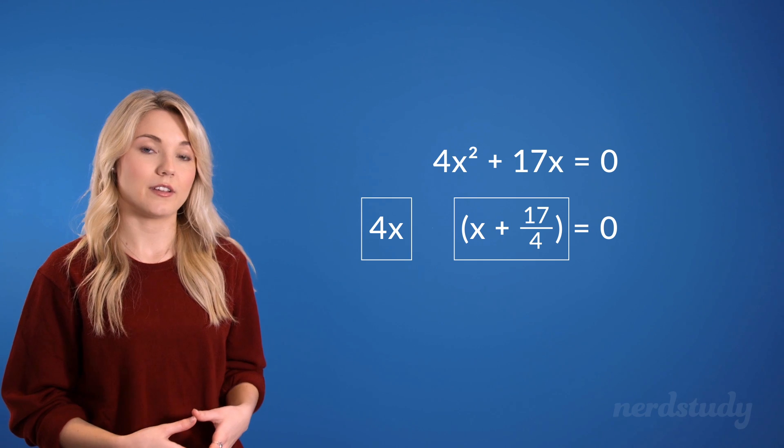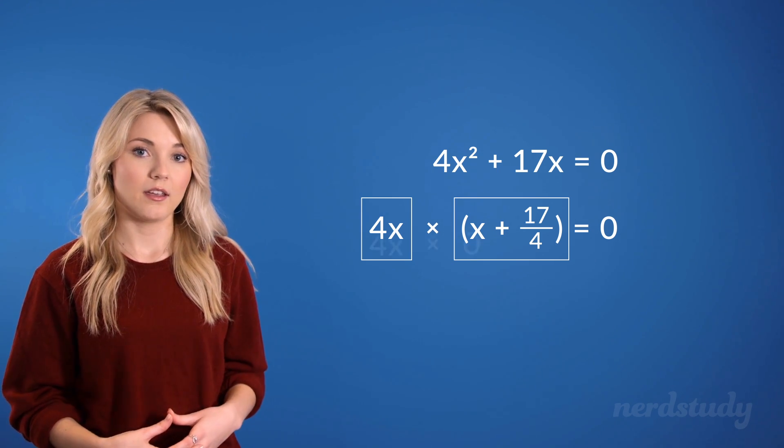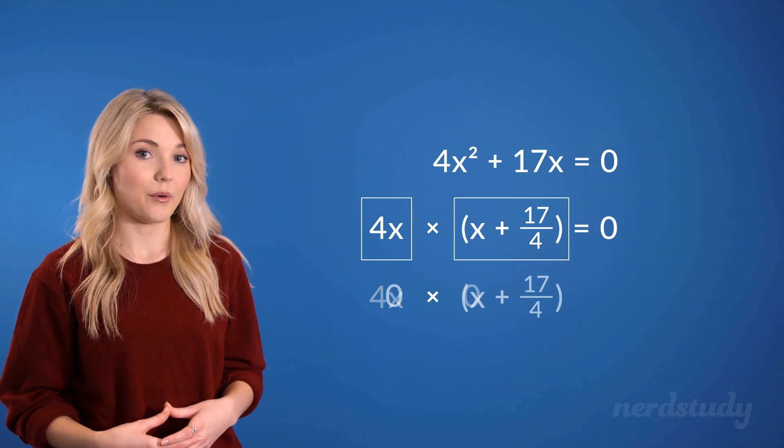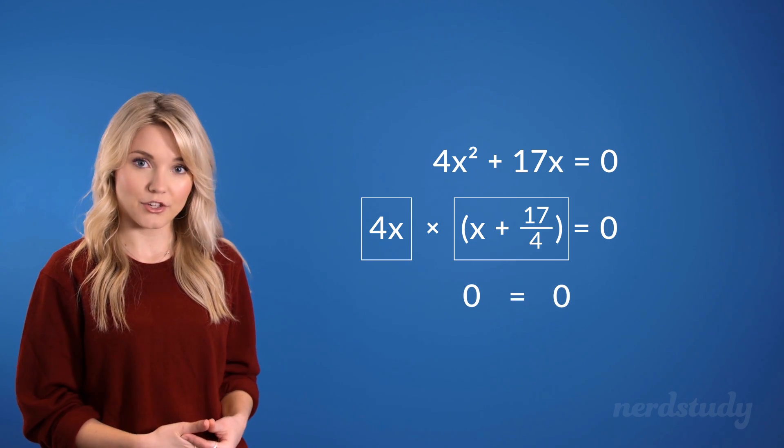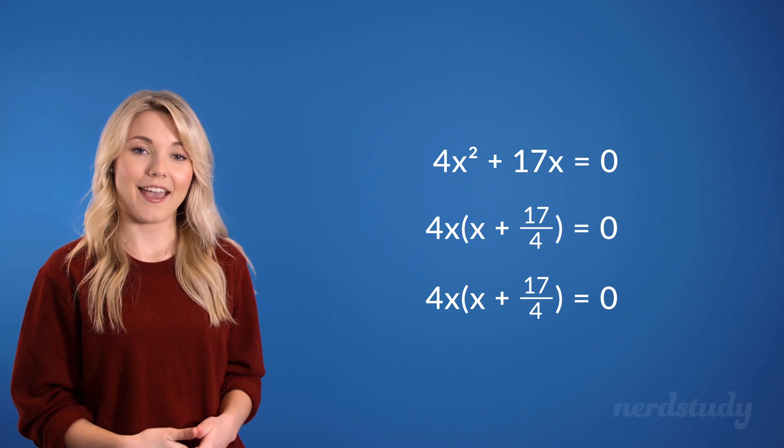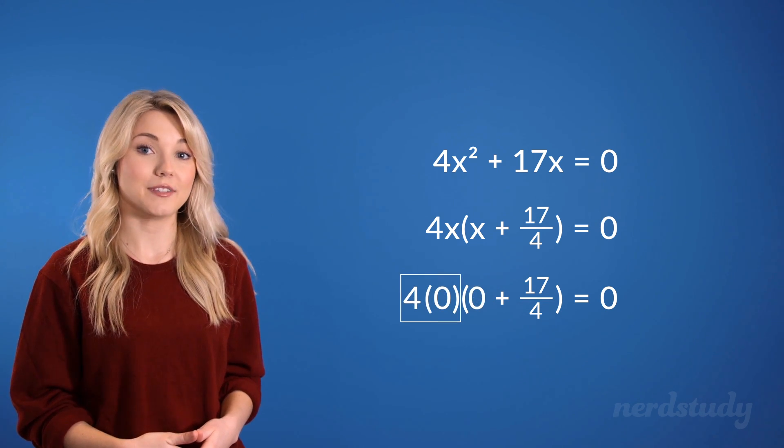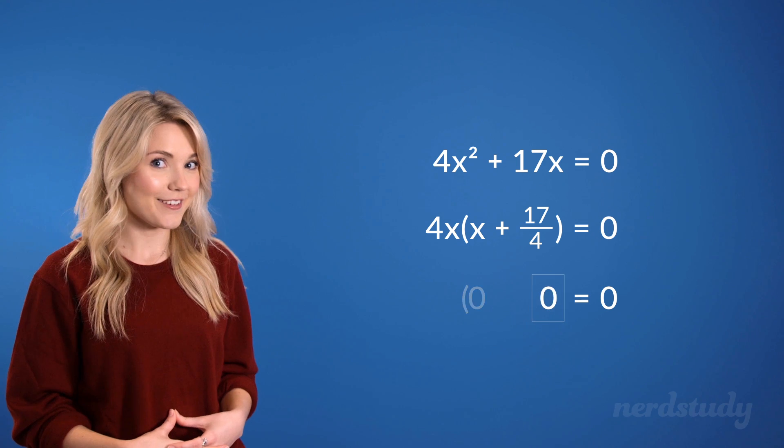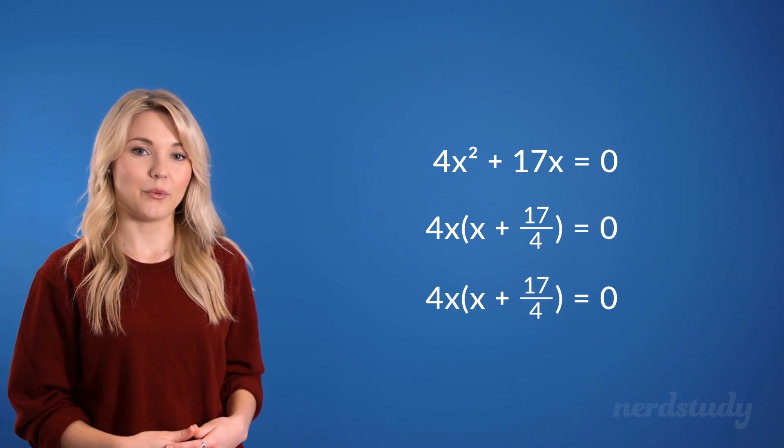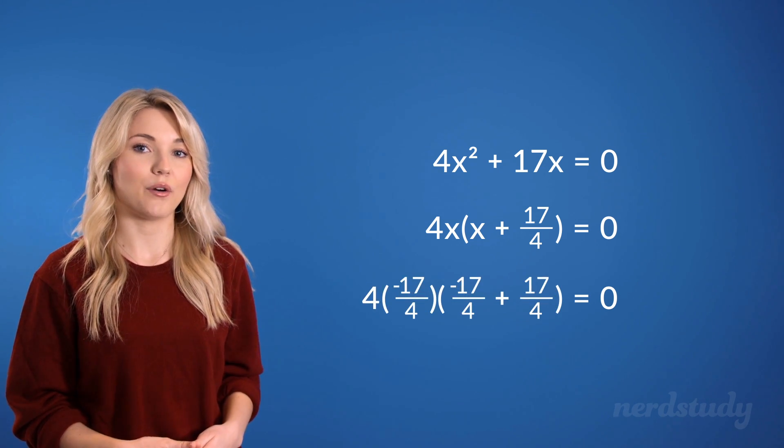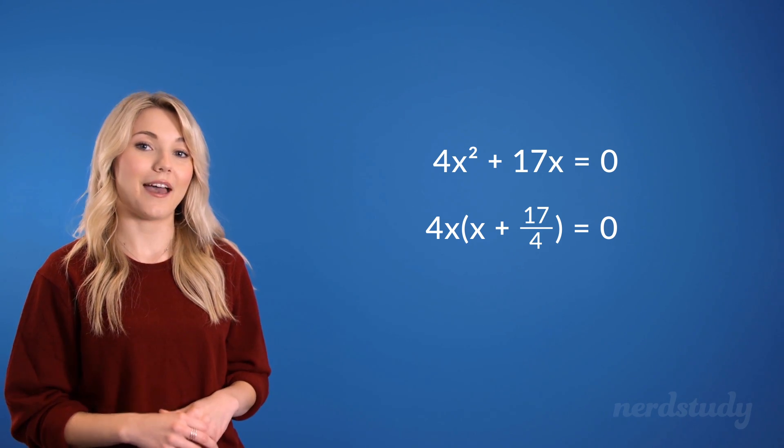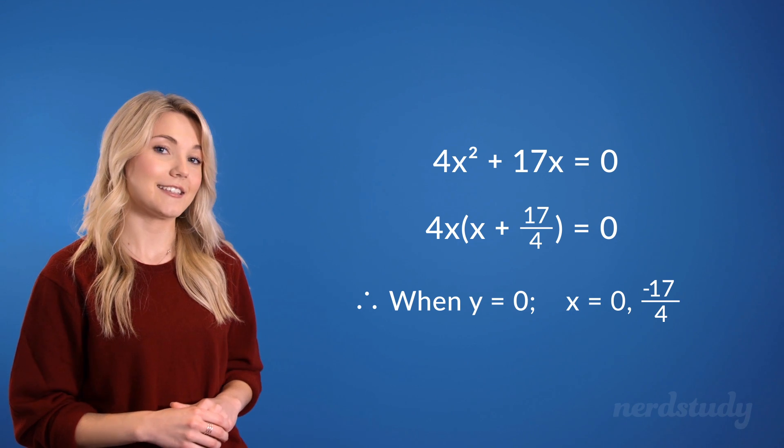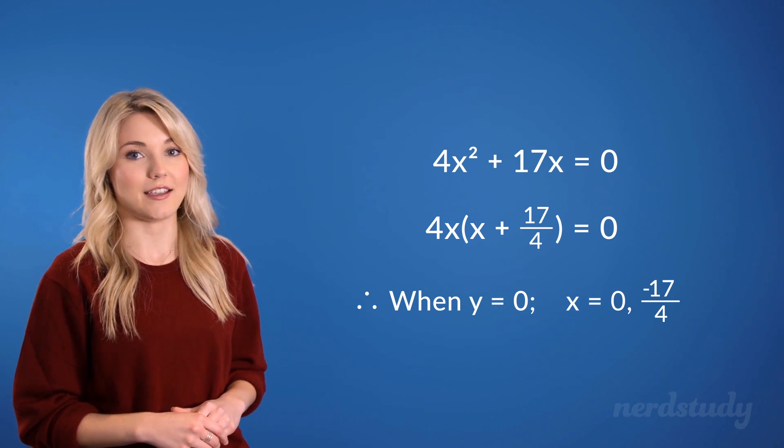Since these two expressions are being multiplied with each other, if either of them equals 0, then we would end up with 0 equals 0, which would indicate a solution. So when x is 0, 4 times 0 would make this side 0, which makes everything 0. As well, when x is negative 17 over 4, we have 0 equals 0. So that means our answer is x equals 0, or negative 17 over 4.